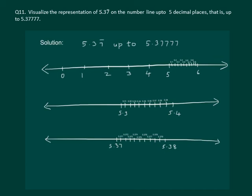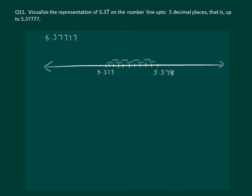So let us magnify 5.377 and 5.378 and divide it into 10 equal parts. So now we have reached four decimal places and the first division represents 5.3771.